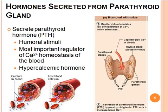Hormones secreted from the parathyroid gland. The parathyroid gland secretes a single hormone known as parathyroid hormone. It is a long peptide of 84 amino acid units. Parathyroid hormone and thyroid hormone calcitonin work antagonistically to regulate the calcium-phosphorus balance in the blood.